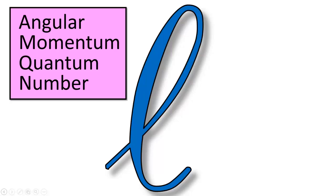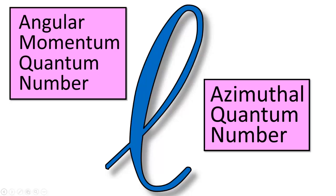Hello everybody! Today we're going to be talking about how orbitals are shaped. It's important for chemists to understand the shapes of orbitals because covalent chemical bonds are the result of the sharing of electrons that reside in these orbitals. The shape of an orbital is determined mainly by L, the angular momentum quantum number, also called the azimuthal quantum number.